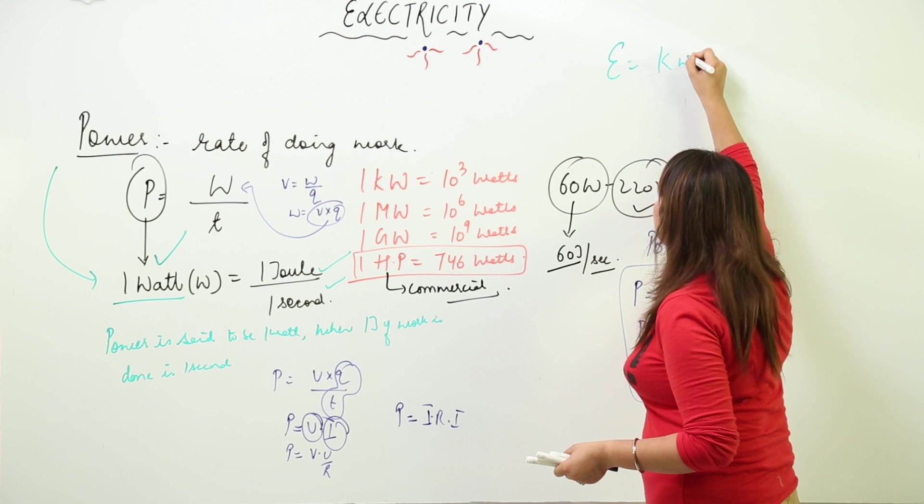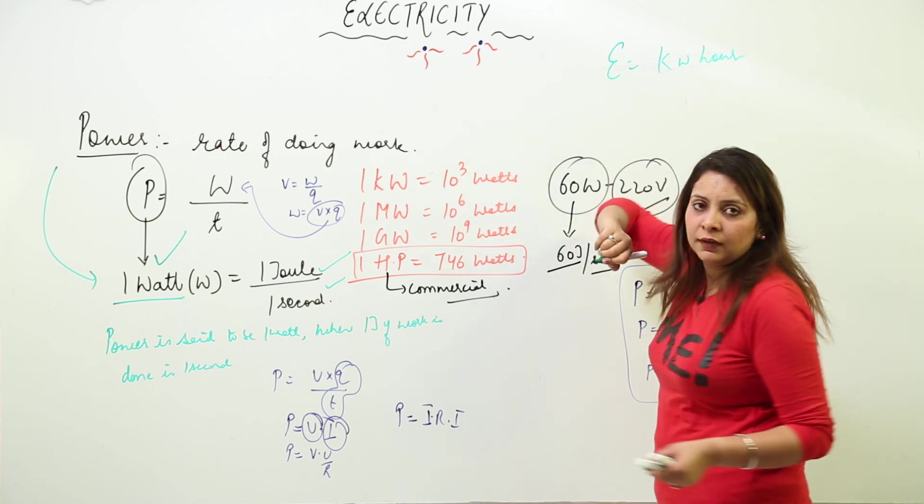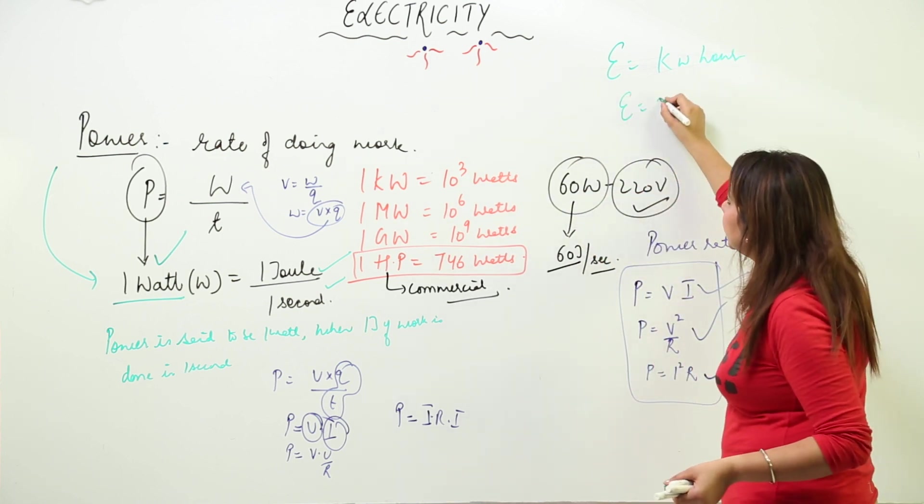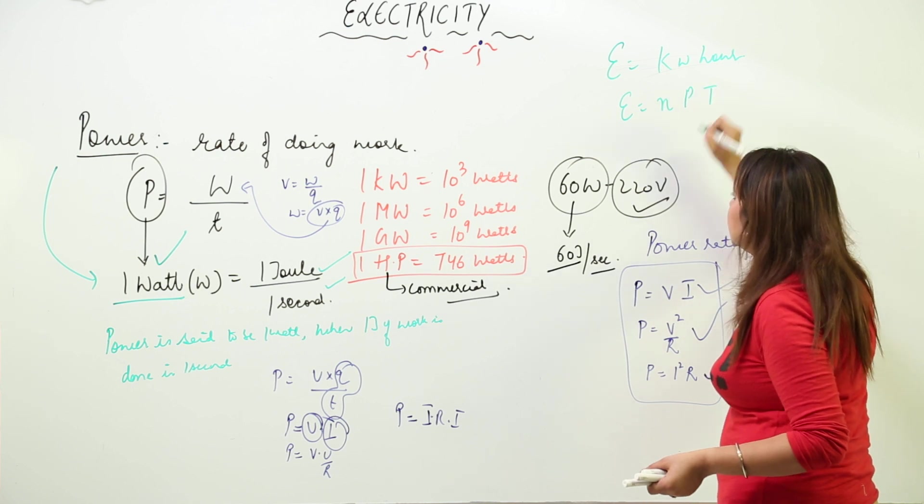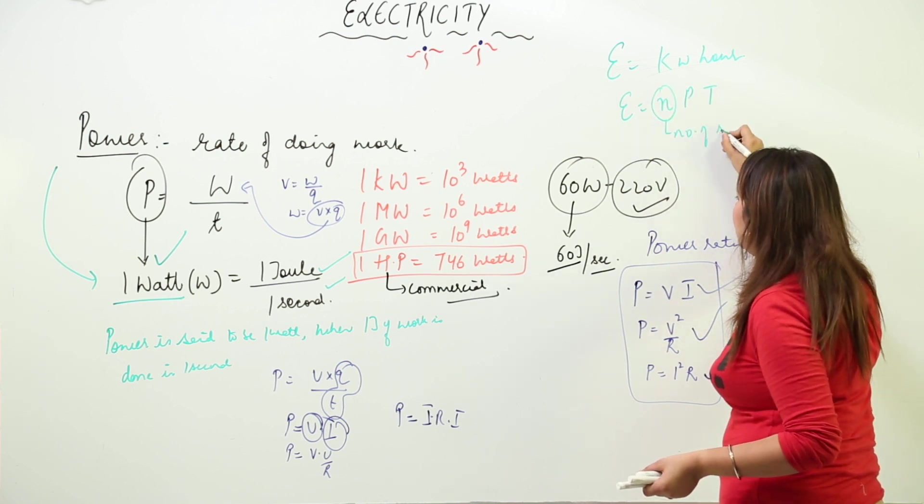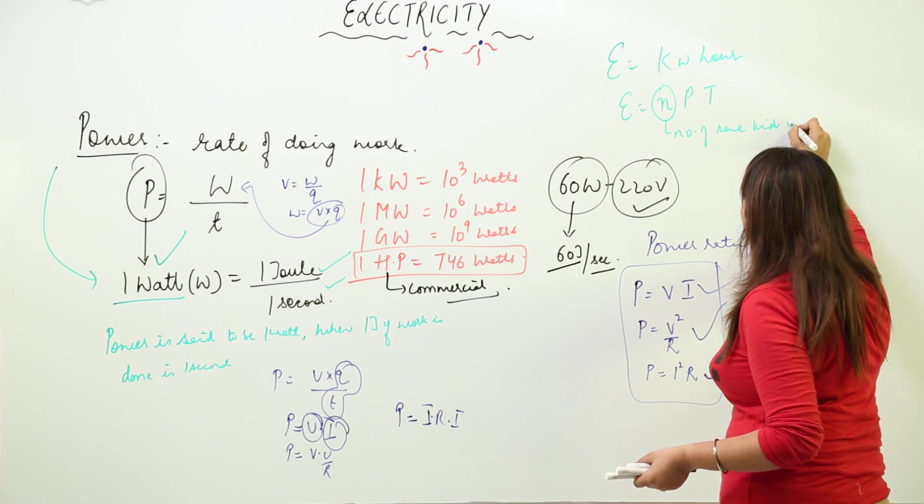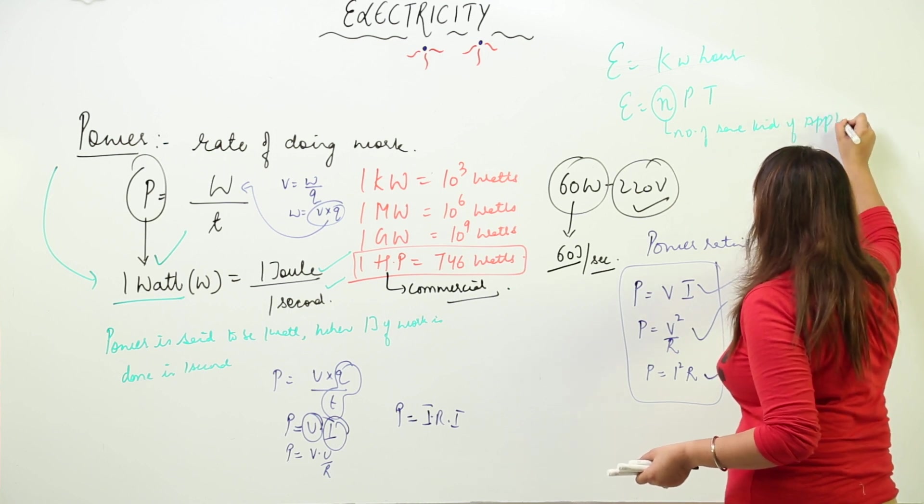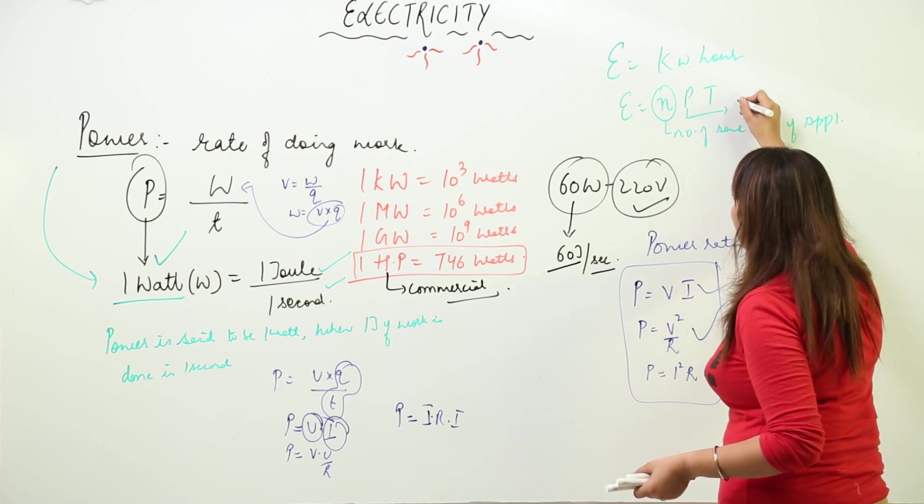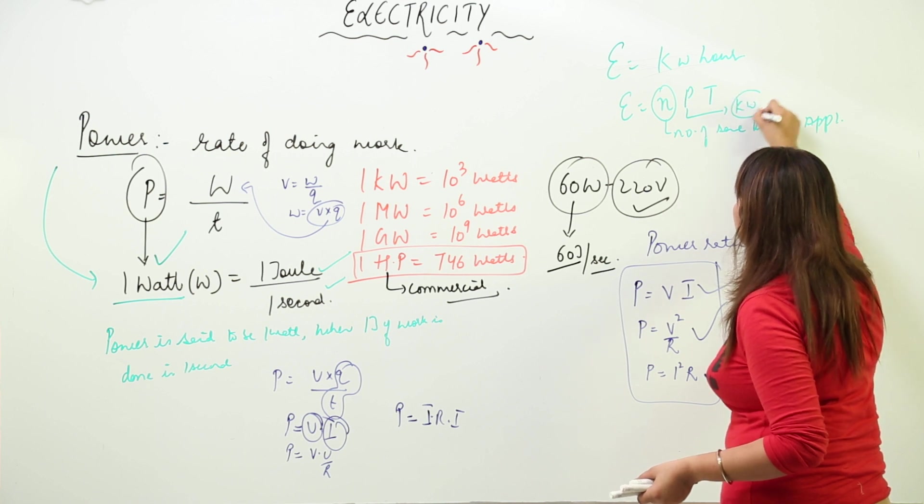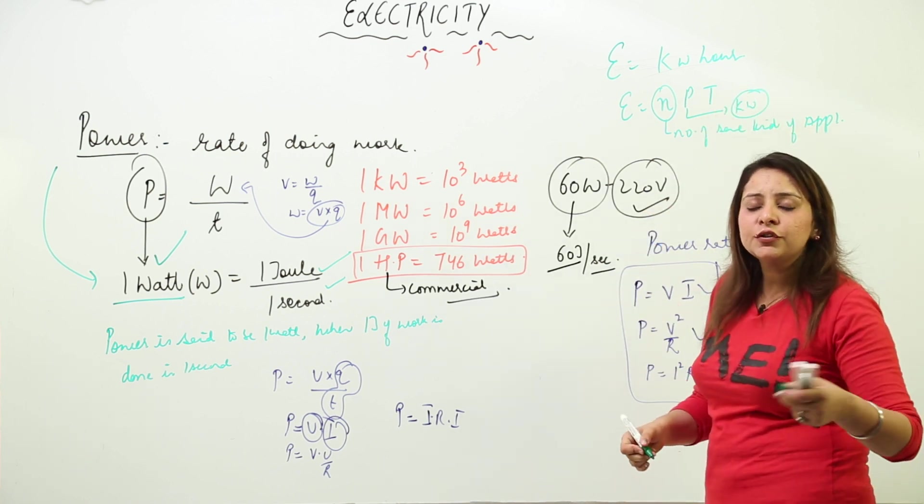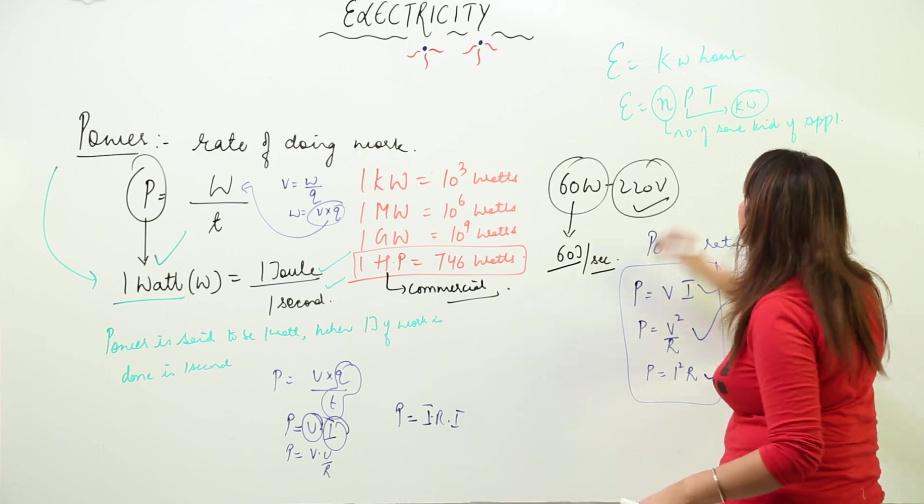The formula is E = NPT, where N is the number of the same kind of appliances, P is power in kilowatt (if in watt, convert to kilowatt), and T is time in hours.